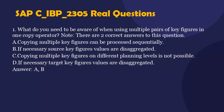Question 1. What do you need to be aware of when using multiple pairs of key figures in one copy operator? Note, there are two correct answers to this question. A. Copying multiple key figures can be processed sequentially. B. If necessary, source key figures values are disaggregated. C. Copying multiple key figures on different planning levels is not possible. D. If necessary, target key figures values are disaggregated. Answer: A, B.